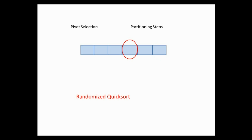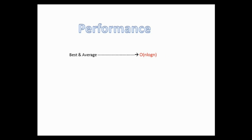It is also possible to opt for a random pivot — in that case we would call it randomized quick sort. Regarding performance, the average and best case is O(N log N), and the worst case is O(N²). The worst case happens when the list is already sorted or all elements are equal.